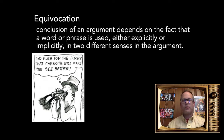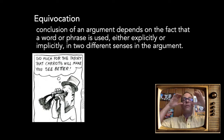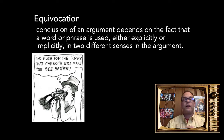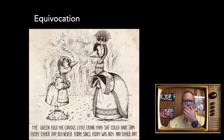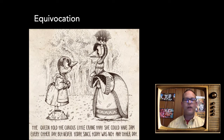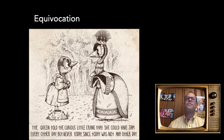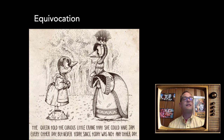An example of equivocation: 'So much for the theory that carrots will make you see better' — the joke being that carrots put in your eyes don't help, but a diet with the relevant vitamins will improve your vision. That's using the same phrase in two different ways. From the Book of Bad Arguments: 'The queen told the curious little crane that she could have jam every other day, but never today, since today was not any other day.' Sometimes equivocations are really tough to detect and it can take centuries — for example, scholars noting that Descartes uses the word 'ideas' in multiple senses, with dramatic philosophical consequences.